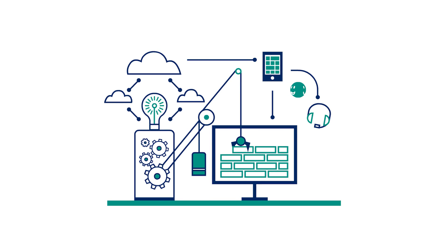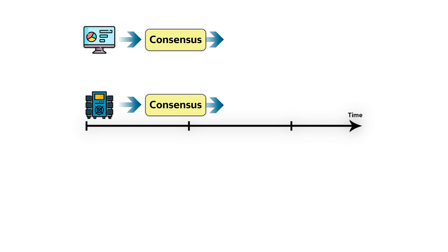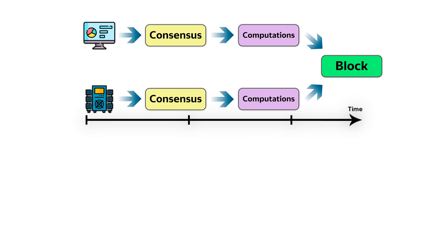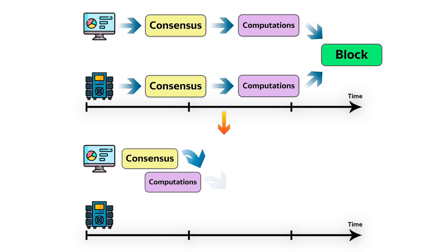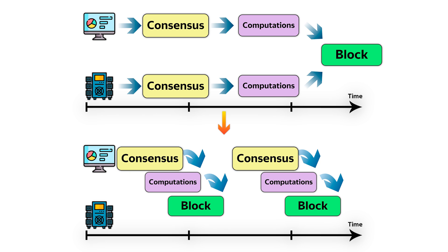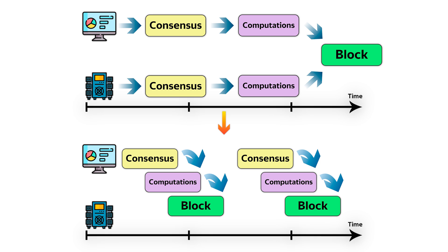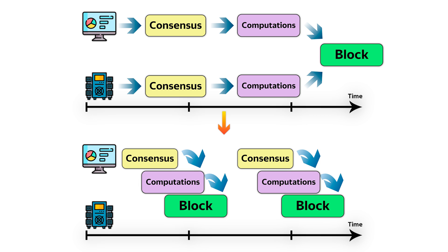Now let's try to figure out how everything works and what it is needed for. The key idea behind the Flow architecture is to separate simple tasks from the complex ones. Simple tasks are called subjective or non-deterministic, such as the process of finding consensus. Such tasks can be performed on a PC, since solving them does not require lots of resources. Complex tasks on the other hand are called objective or deterministic — for example, computations or block formations — and they require serious computing power, so such nodes run on servers and data centers.